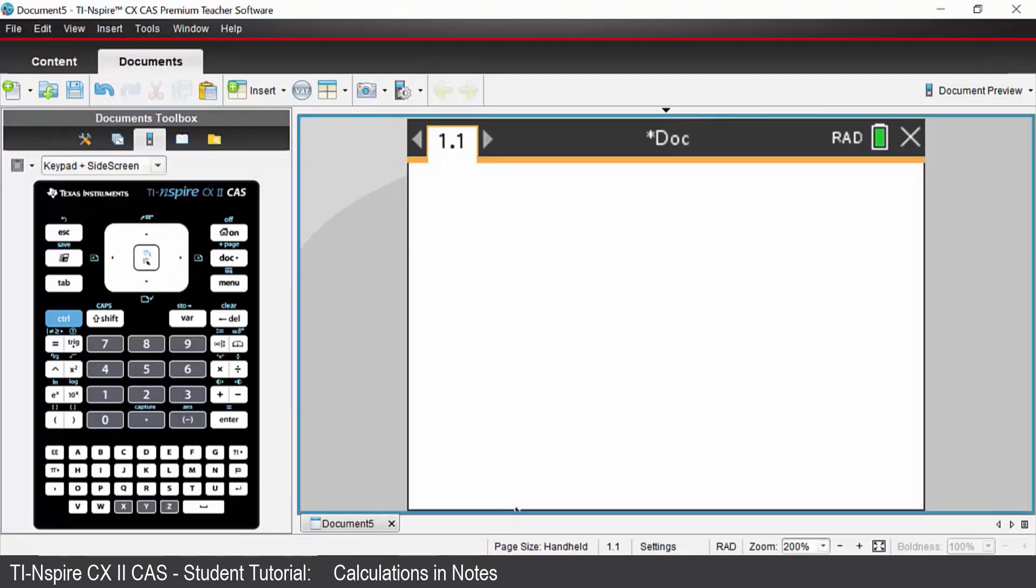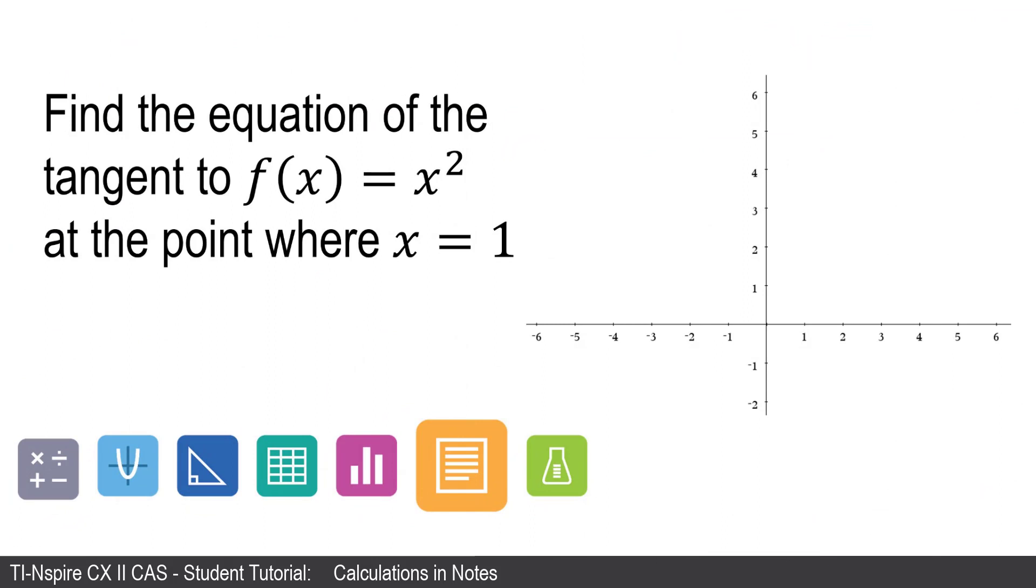What we are going to do is create a file that will find the equation of the tangent to any function at any x value and we're going to start with a parabola at the point where x equals 1.